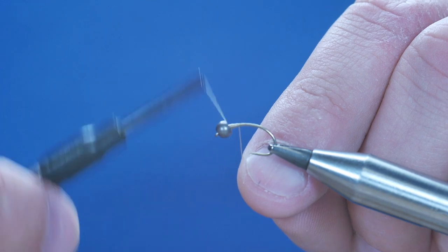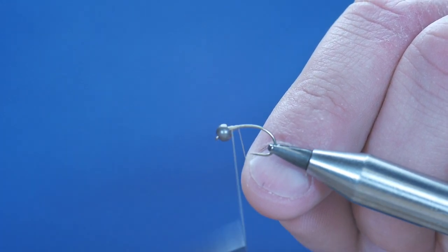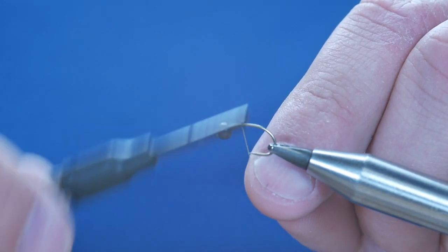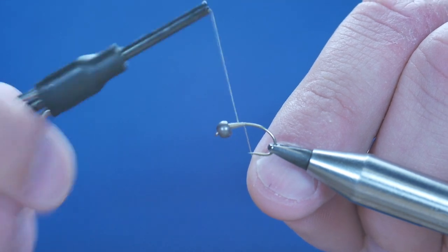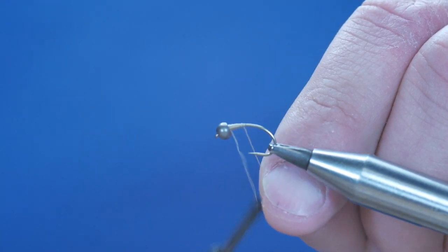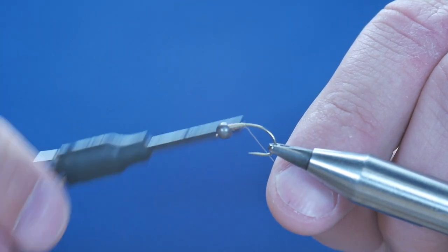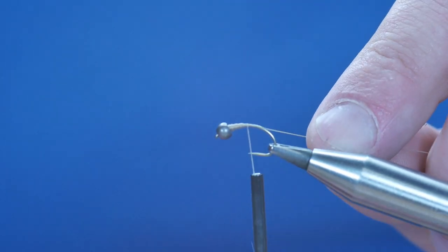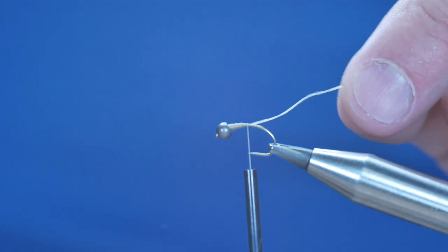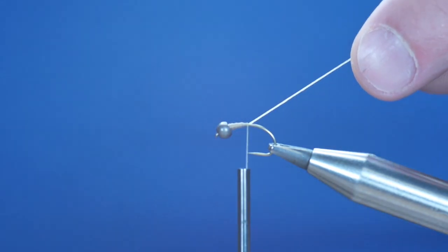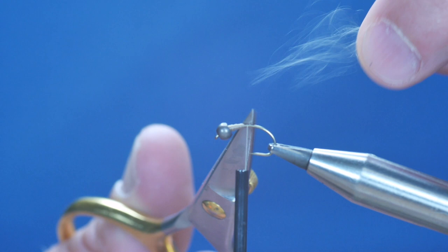Now I'm using this thread really to create a nice tapered body for this bug, so I want it to be quite thick at the top towards the bead and tapered down towards the butt end. Now I'm going to let go of my rat's tail and just remove it.